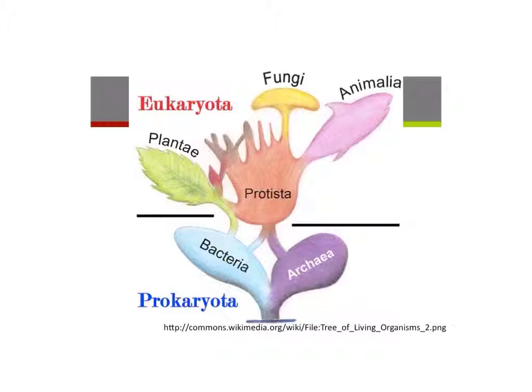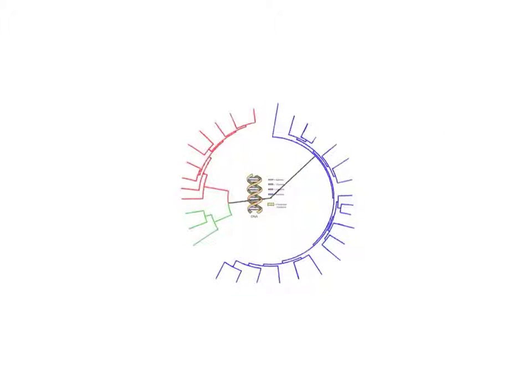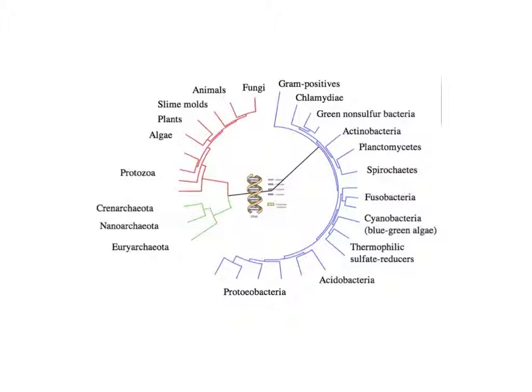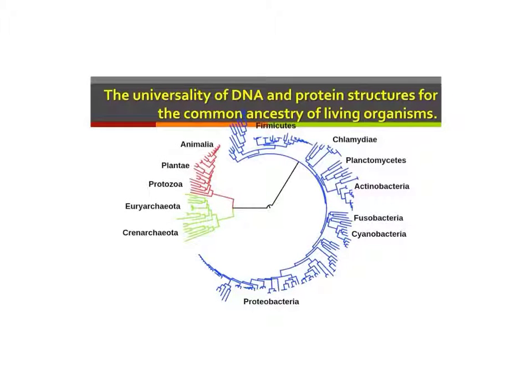So comparative biochemistry allows us to see how animals, fungus, plants, protists, and even bacteria are related in some form or fashion. So all living life forms on this planet share a common ancestor starting from the middle and branching outwards into all these different families or phylogenies. We call this the universality of DNA and protein structures for the common ancestry of living organisms.